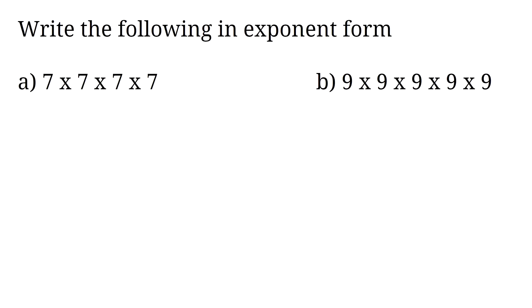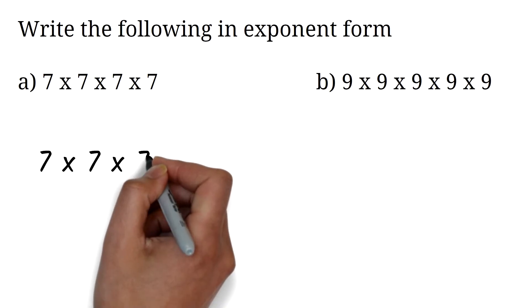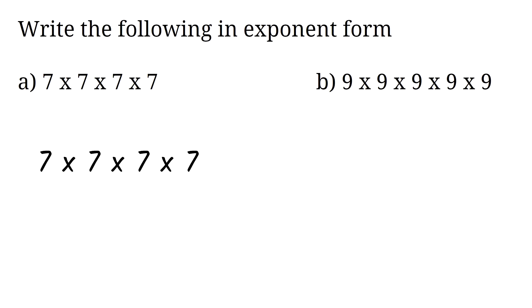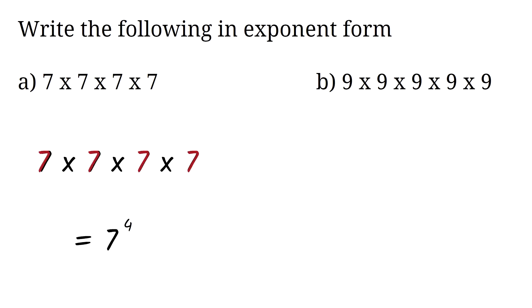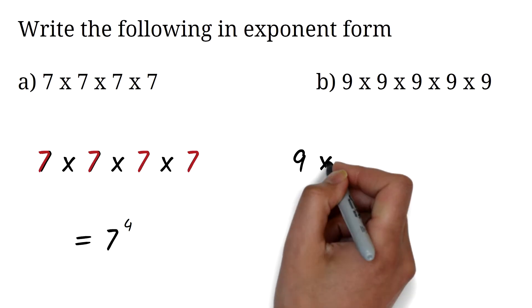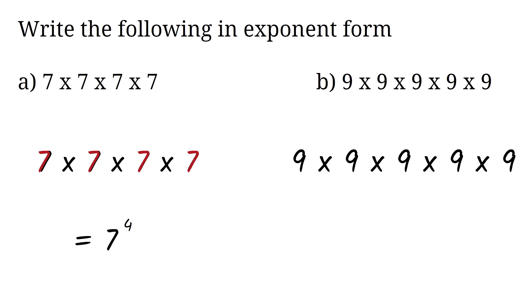Write the following in exponent form. We know that exponents represent the number of times a number or base multiplies itself, so to write this in exponent form we are just counting the number of times the base is repeated. To write 7 times 7 times 7 times 7 in exponent form, it would be 7 exponent 4 because there are four 7's. To write 9 times 9 times 9 times 9 times 9 in exponent form, it would be 9 exponent 5 because there are five 9's.